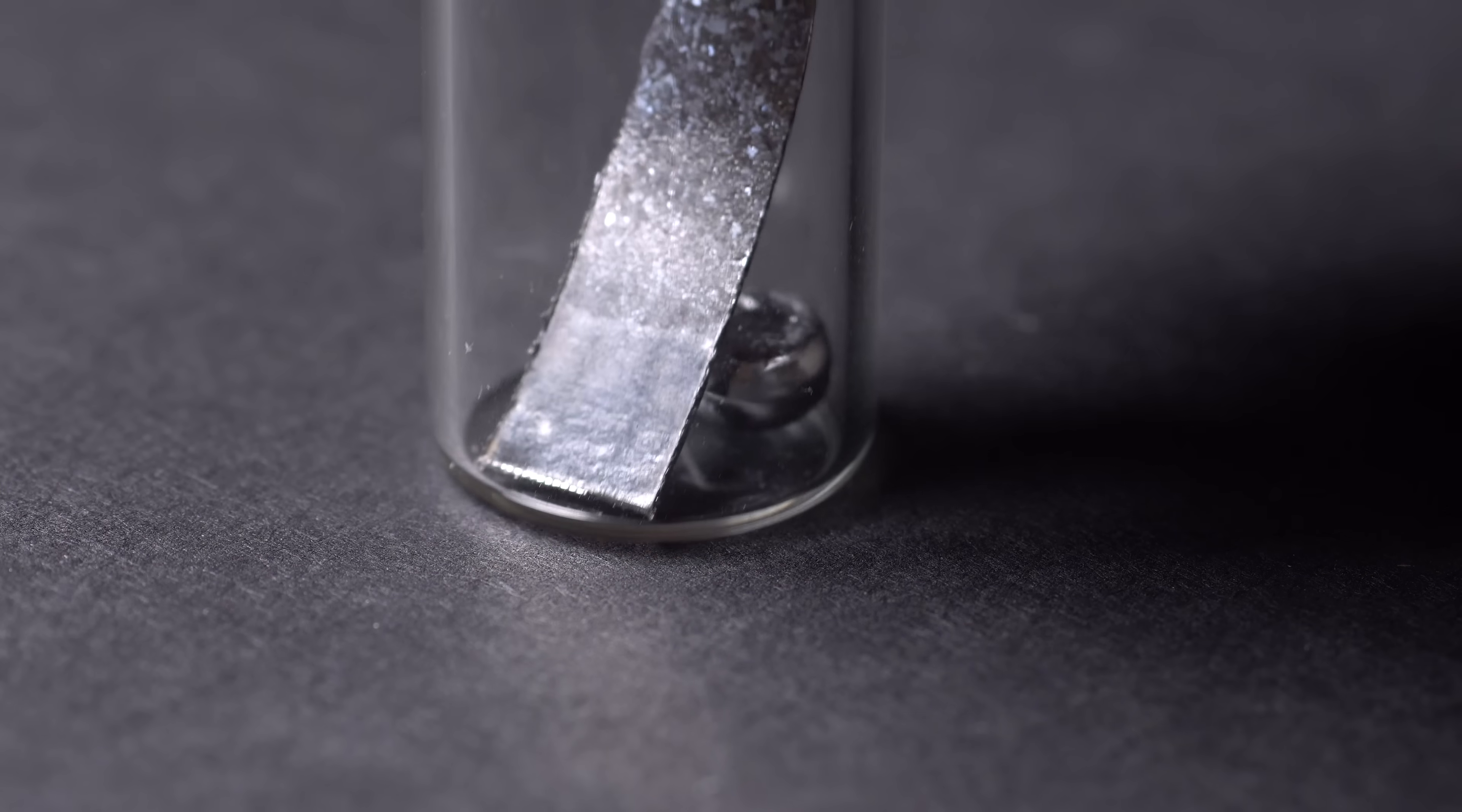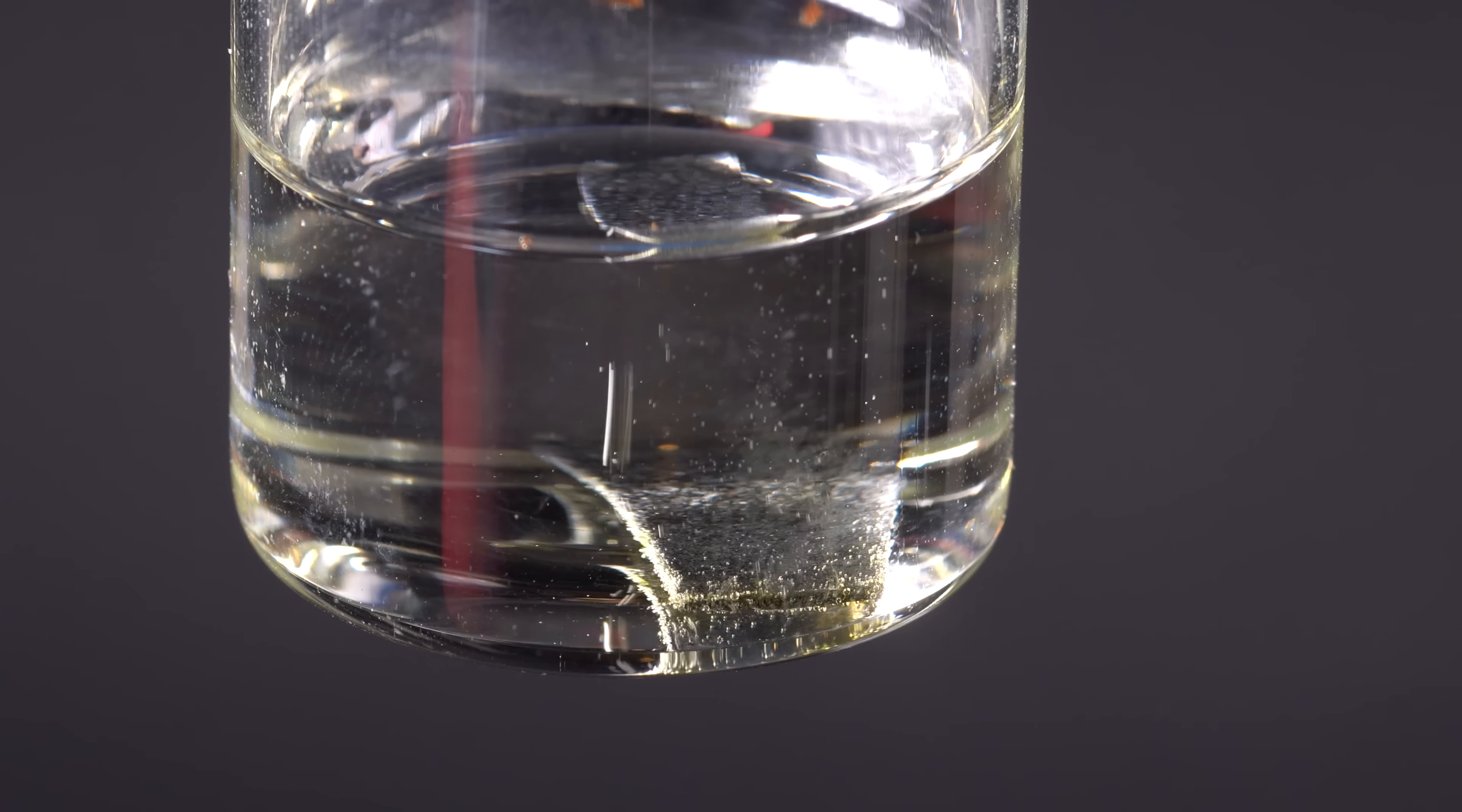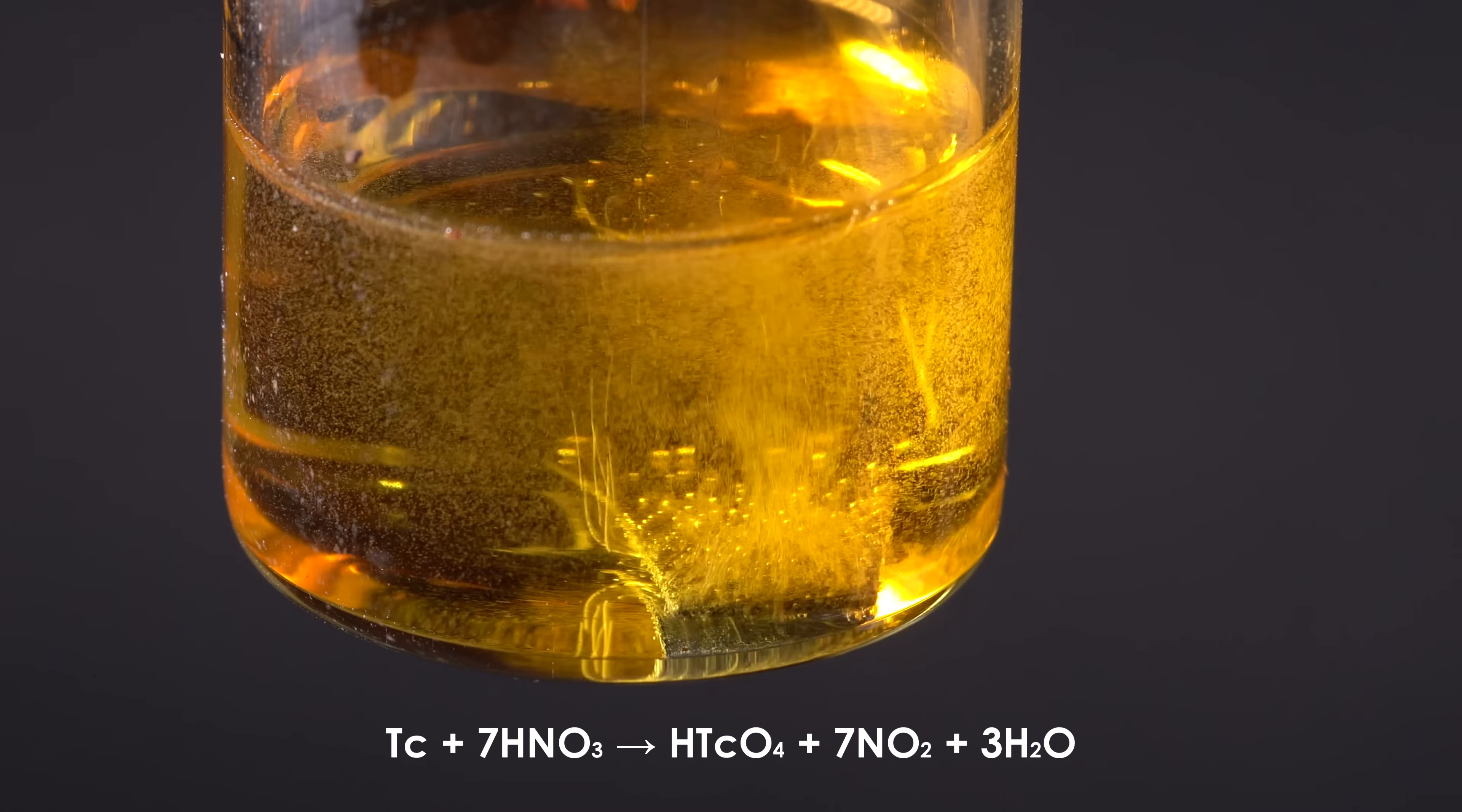To conduct experiments instead of technetium, I am using another metal which has very similar chemical properties, that is, rhenium. According to the textbook data, chemical properties of rhenium and technetium are supposed to be very similar, because rhenium is a fellow radioactive metal of technetium, and it also actively dissolves in nitric acid, forming pertechnetic acid.